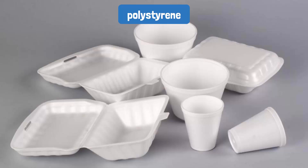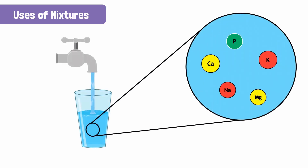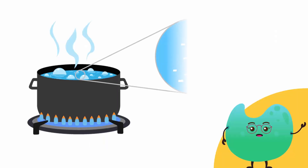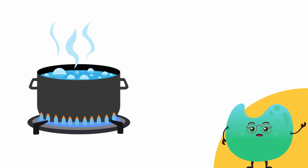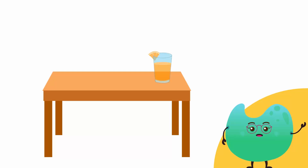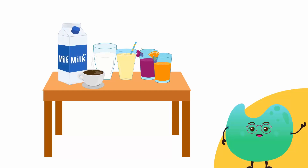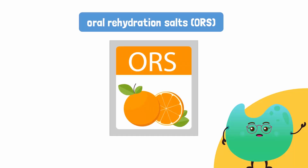Polystyrene traps heat and keeps food warm for a long duration. Now, how do we use mixtures in daily life? Tap water is a mixture of pure water and different minerals. When we boil tap water, some of the salts are separated from water and can be seen floating in it. It is used for drinking, washing, and other essential purposes. Mineral water is also a mixture of pure water and some useful minerals. Various drinks that we commonly use, such as juices, tea, and milk, are also mixtures.